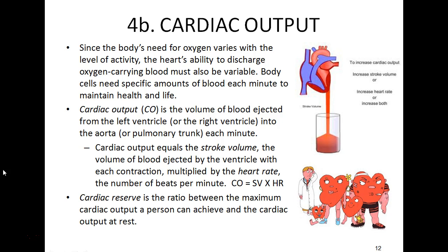We now turn to cardiac output. The heart does not always put out the same amount of blood because the body's need for oxygen varies with activity level. When lethargic, muscle and tissue do not need much oxygen. But during running or high cardiovascular activity, there is a large oxygen demand. Body cells need specific amounts of blood each minute to maintain health and life. Cardiac output measures how effectively the heart pumps blood to fulfill that transport function.